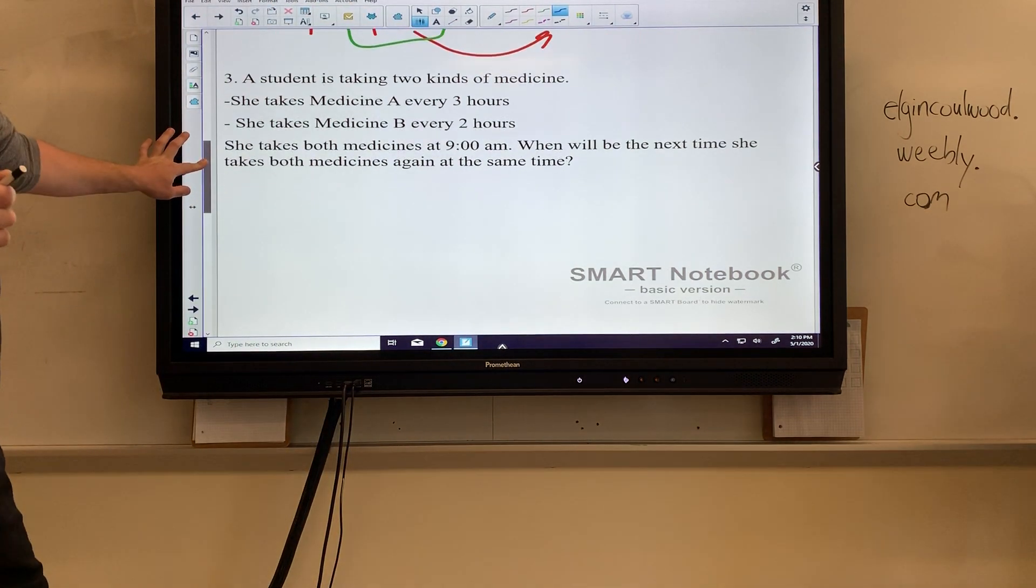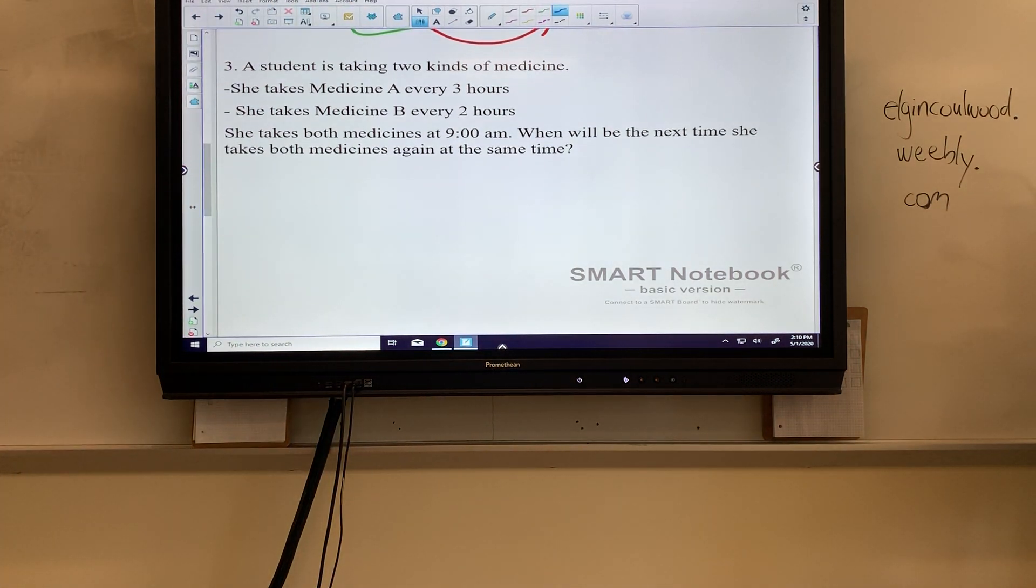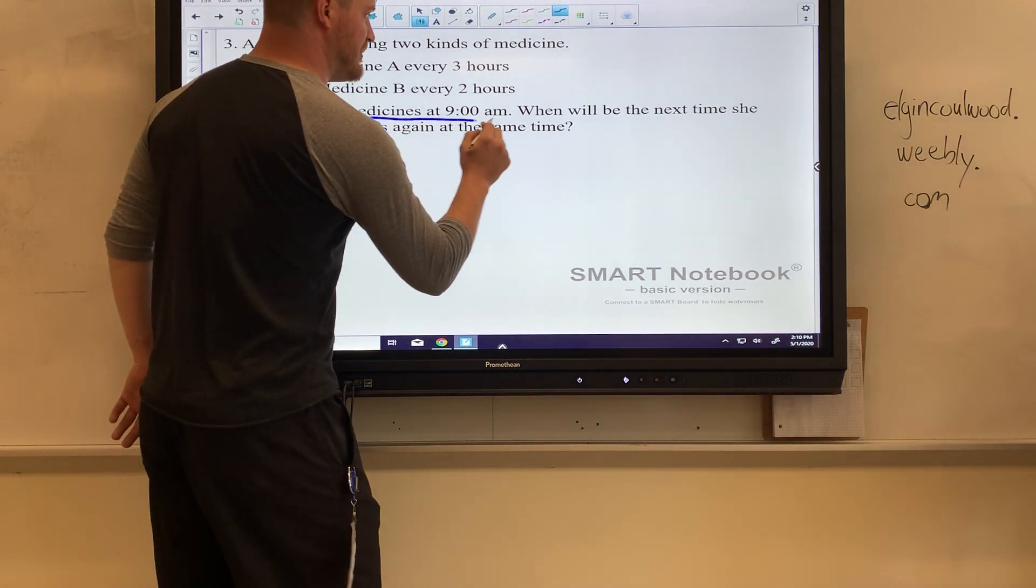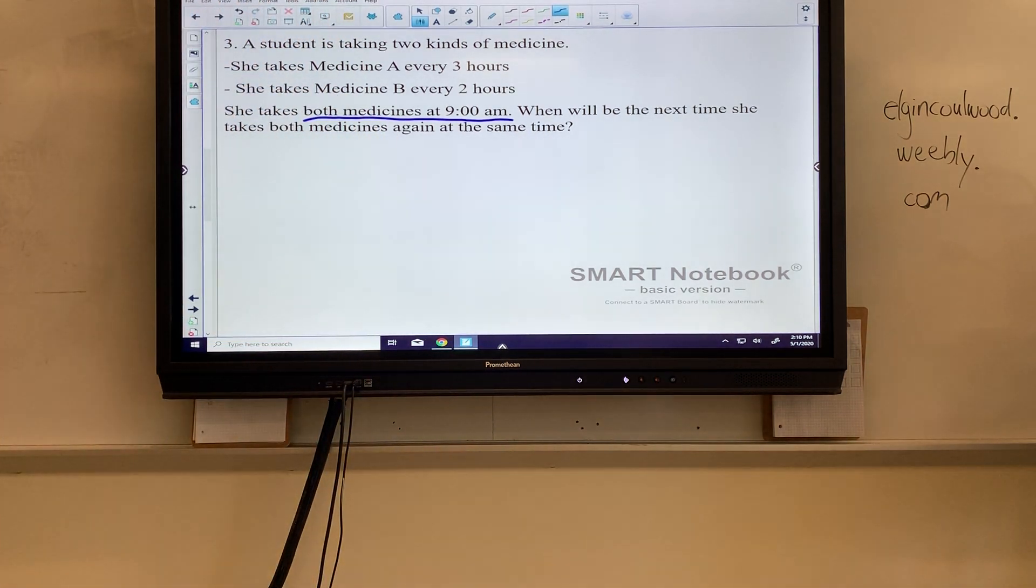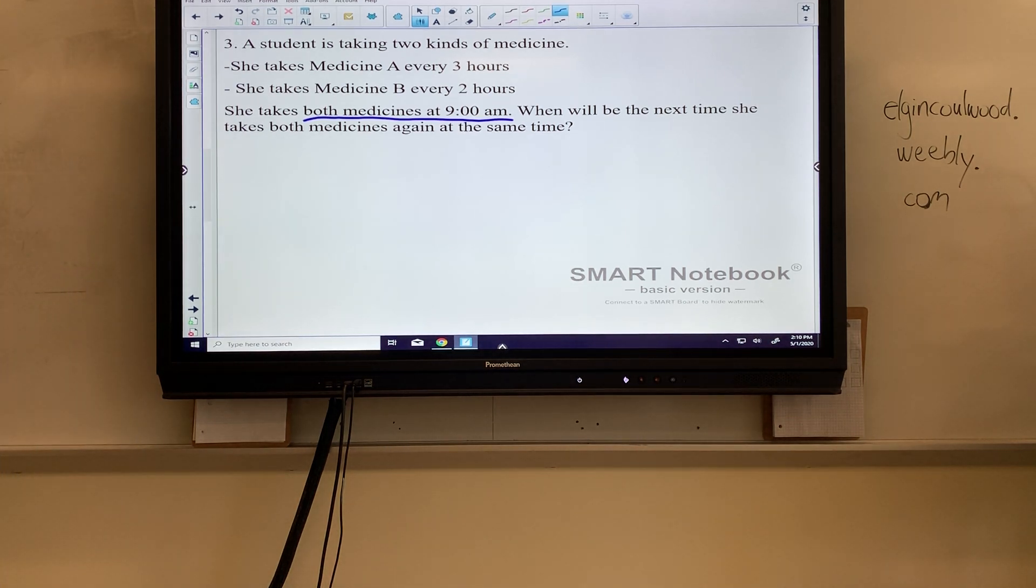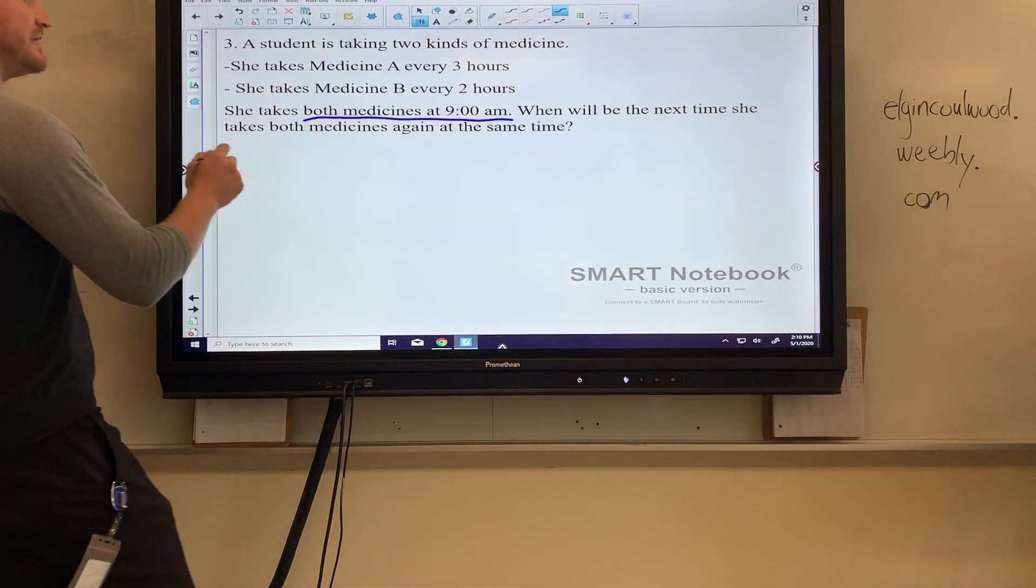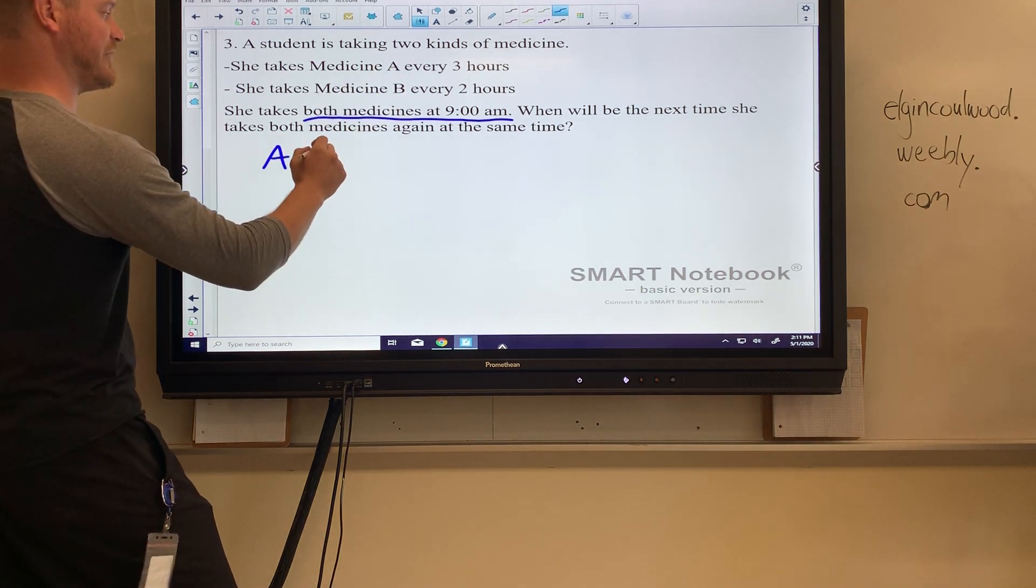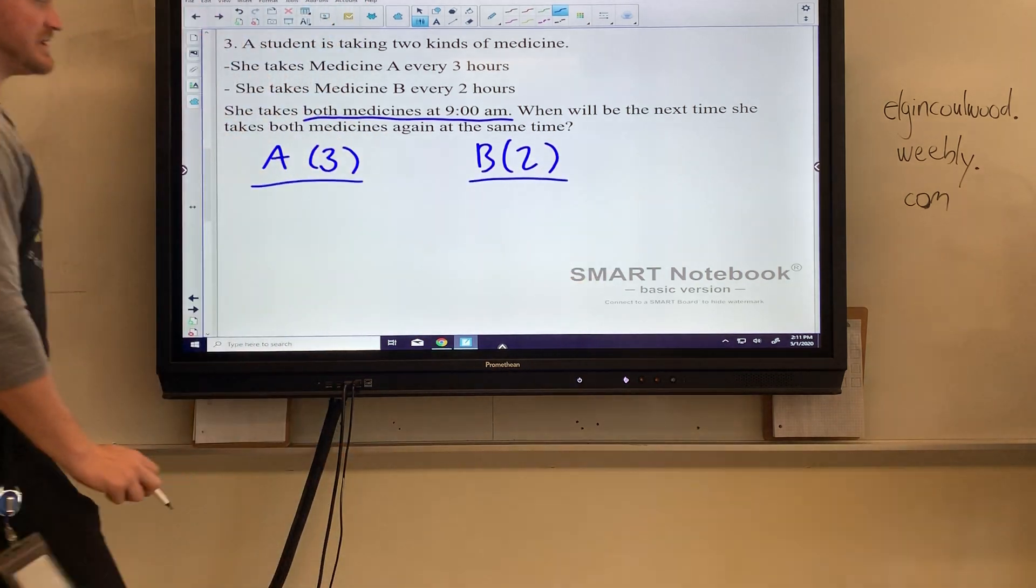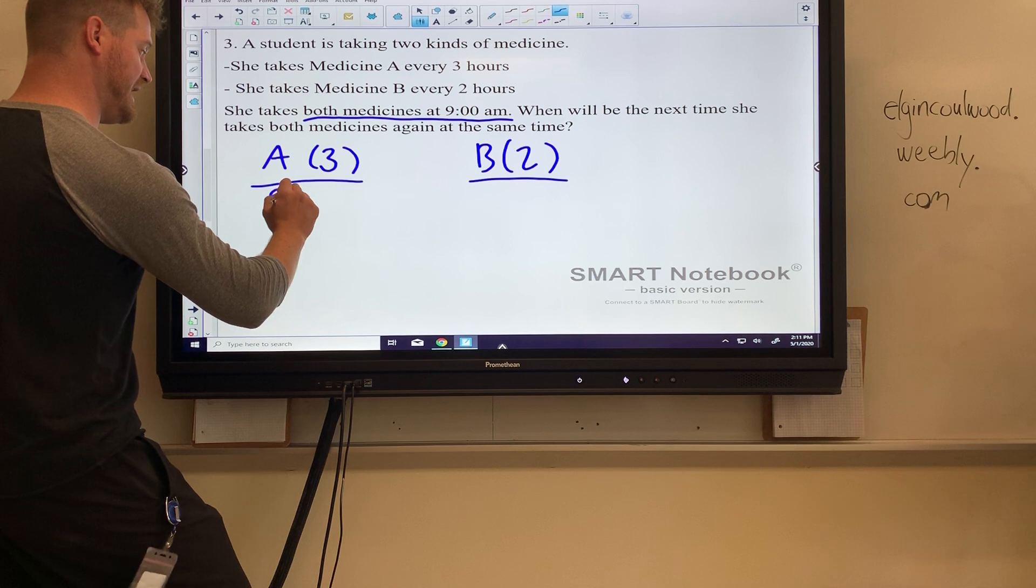Number three: A student is taking two kinds of medicine. She takes medicine A every three hours, medicine B every two hours. She takes both—this is the most important part—she takes both of them at 9 in the morning, 9 a.m. When is the next time she's going to take both medicines again? I'm going to show you two ways: the fail-proof, kind of longer way at the beginning, and then a shortcut for those who are really good with time. Medicine A is taken every three hours, medicine B is taken every two hours. The most important part is she starts at 9 a.m., so we're going to write 9 a.m. under each one to start with.